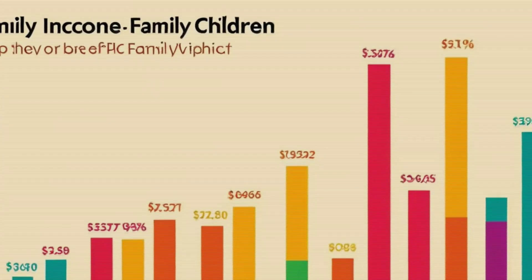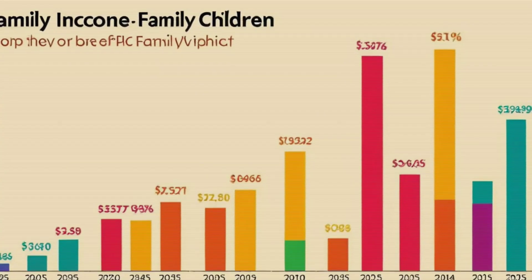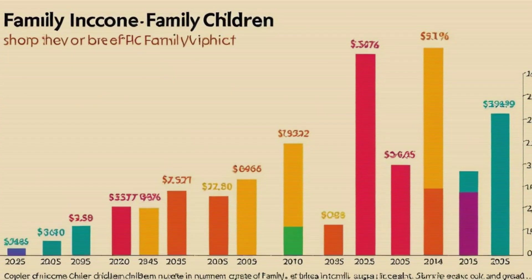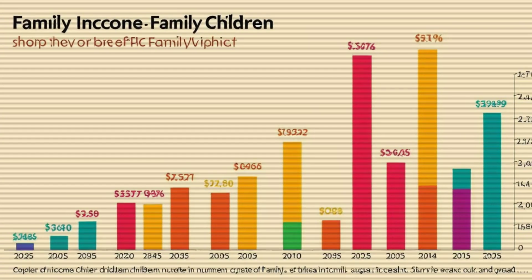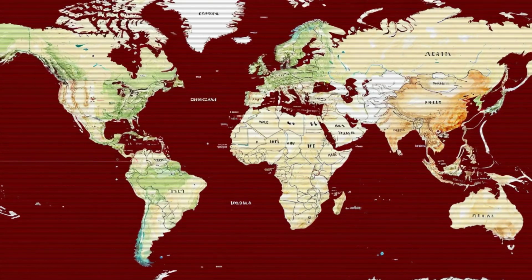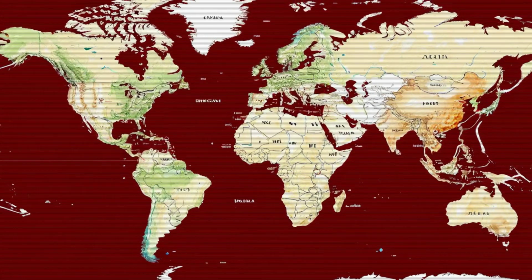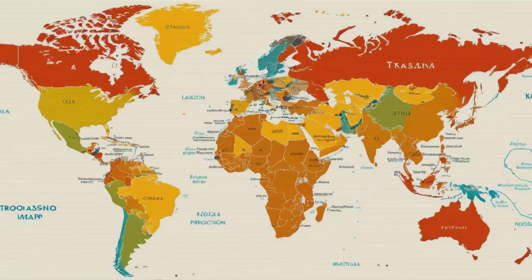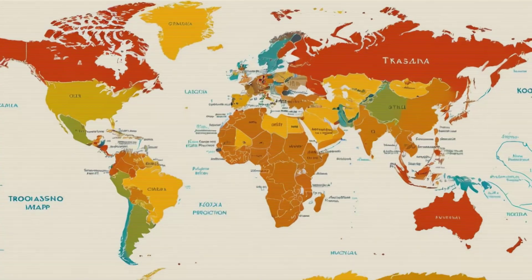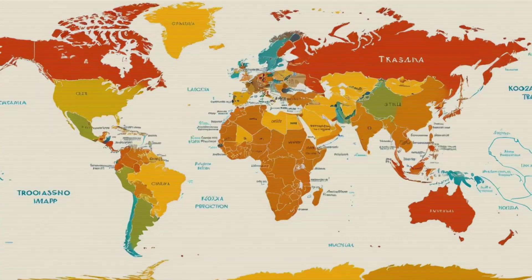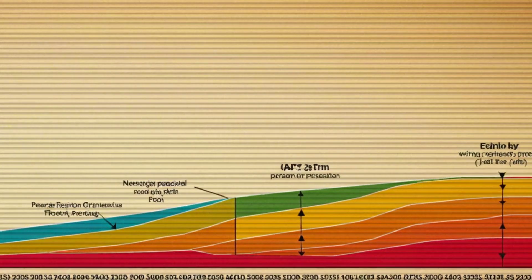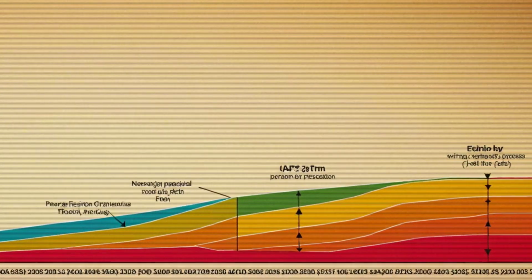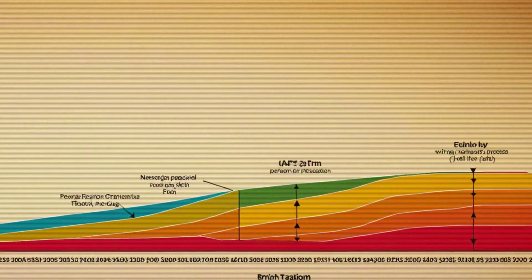Interestingly, there is a connection between how many children a family has and how much money they have. In many countries, when people become less poor, they tend to have fewer children. This is called the demographic transition. It's important for every part of the world to go through this transition to help control population growth.